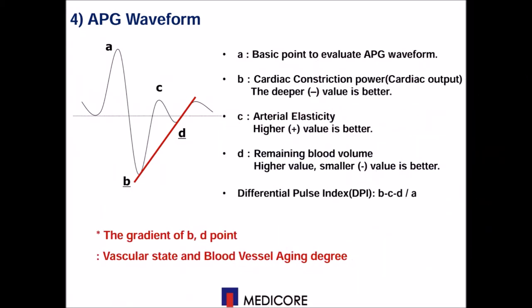When you analyze the APG waveform, you should know about each wave pattern such as the height and length to each point. On this diagram, A is a base point to evaluate the waveform, and B means the cardiac constriction power, which is the initial systolic negative wave. C wave is arterial elasticity, which should be higher — this C means the late systolic re-increased wave, which represents vascular compliance. D is the remaining blood volume in the vessel, and it should be as low as possible.